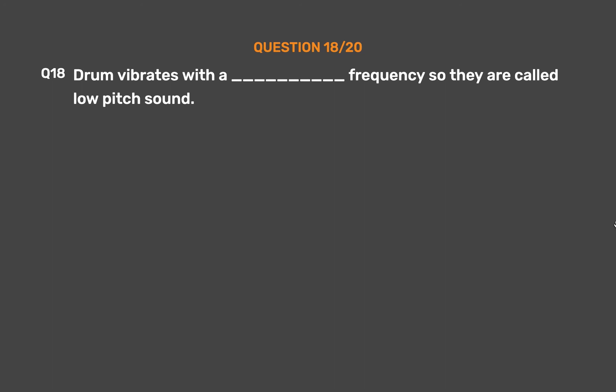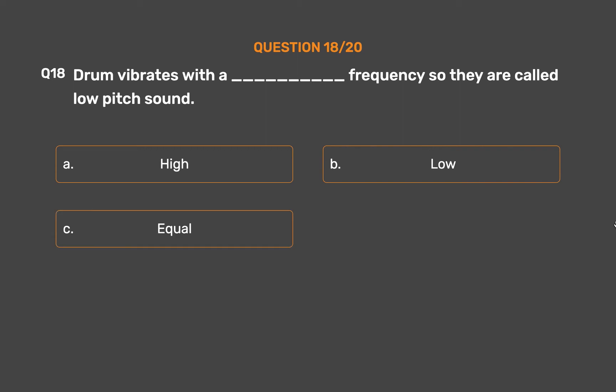Question number 18. A drum vibrates with underscore frequency, so they are called low pitch sound. Option A, High; Option B, Low; Option C, Equal; Option D, None of these.